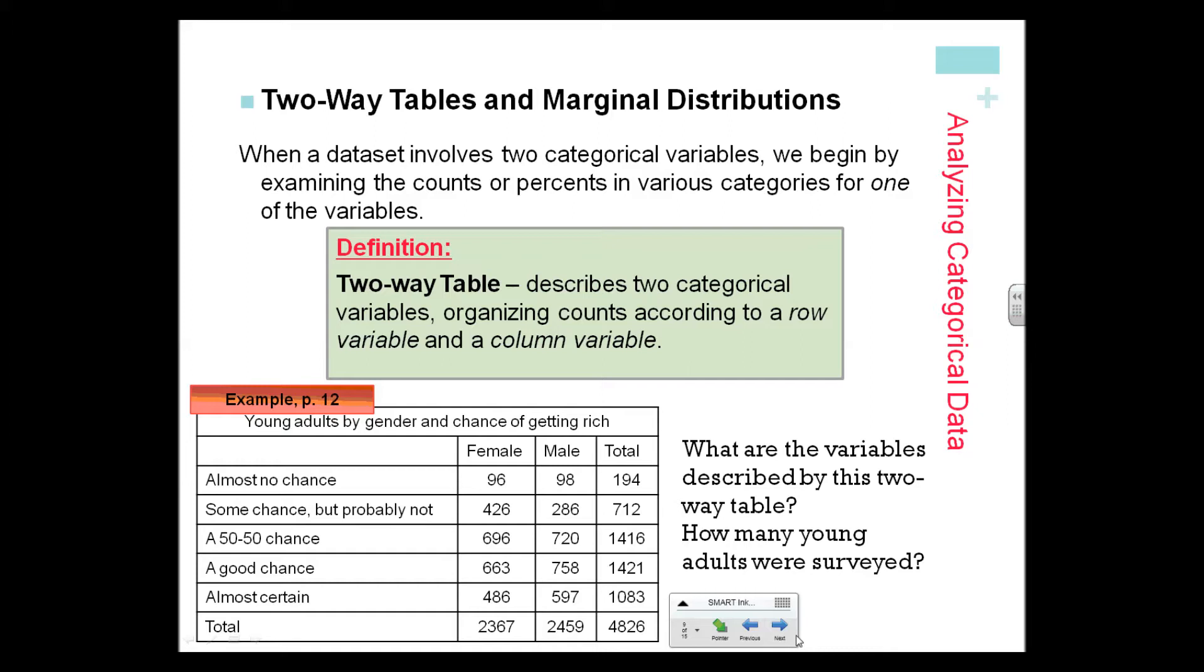There were 4,826 randomly selected young adults, age 19 to 25, and they were asked the question: What do you think are the chances you will have much more than a middle-class income at the age of 30? So they were answering these questions.